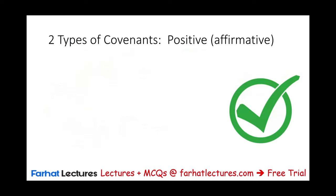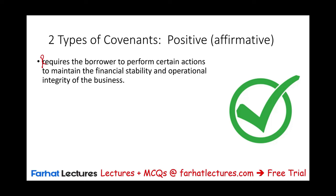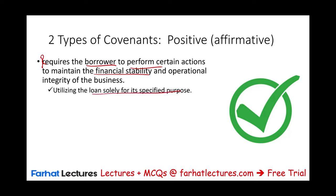When it comes to covenants, we have two types. We have positive or affirmative covenants. Positive means the borrower must perform certain actions to maintain the financial stability and operational integrity of the business. For example, when we give you the money, you have to use it for that specific purpose. If you're borrowing to build a new warehouse, you must use the money for that warehouse. If borrowing to purchase inventory to expand, you must purchase inventory.